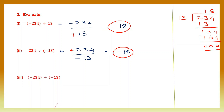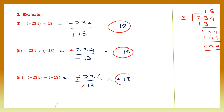Next: minus 234 divided by minus 13. Here the signs are the same, so the answer is positive. Put the plus sign or you don't even have to write it — it's understood. The signs get cancelled. Divide 234 by 13, which has already been done, giving quotient 18. So the answer here is plus 18. You can even write 18 without a sign.